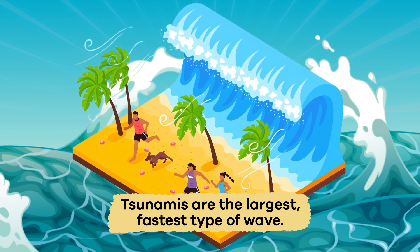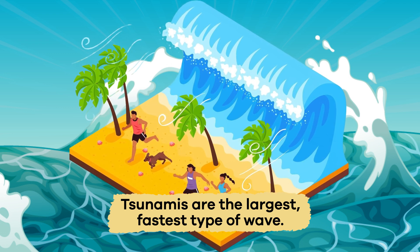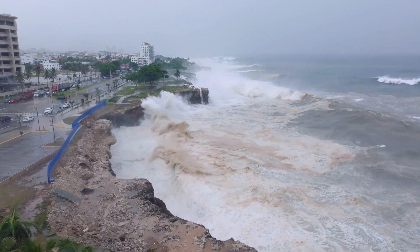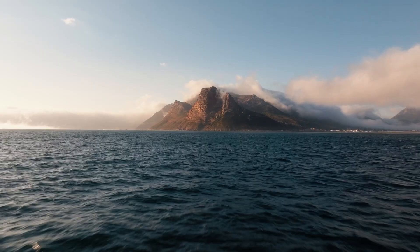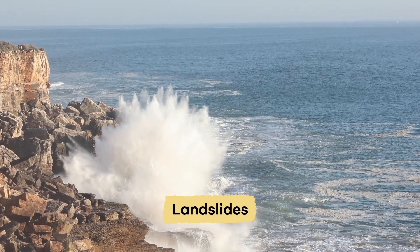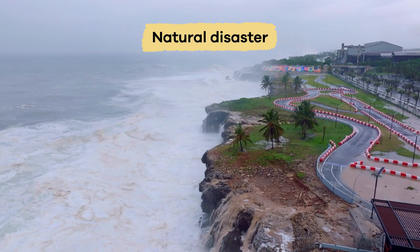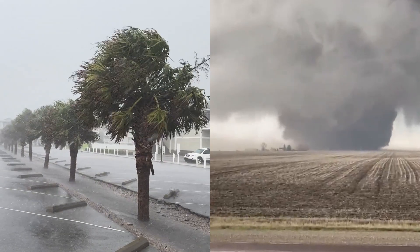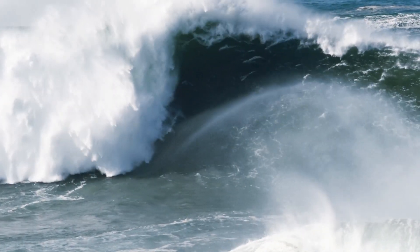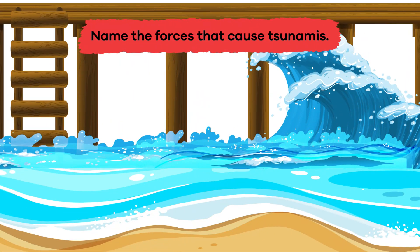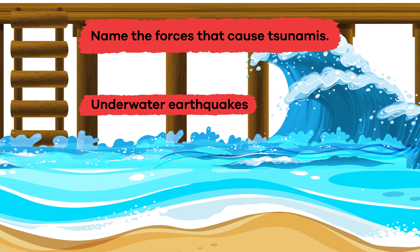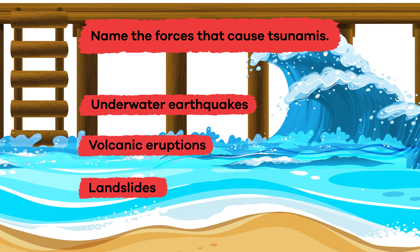Tsunamis are the largest, fastest type of wave, and by far the most dangerous. They are caused by underwater earthquakes, volcanic eruptions, or landslides, and are considered a natural disaster, like a hurricane or tornado. Tsunamis are pretty rare, but can do a lot of damage when they reach the shore. Question. Name the forces that cause tsunamis. Underwater earthquakes, volcanic eruptions, or landslides.